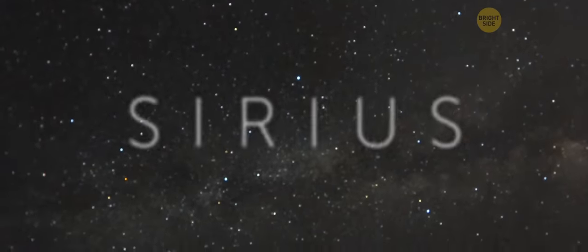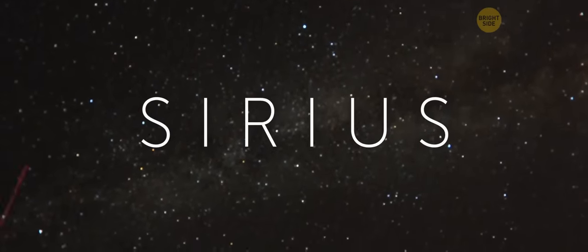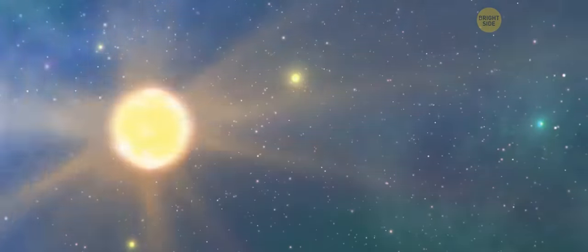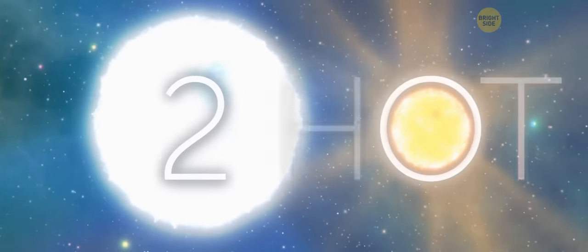Now, let's put Sirius at the center of our solar system. It's the brightest star in our night sky. It's only 70% bigger than the sun, but almost twice as hot. So its glow is not only bright, it's sizzling.